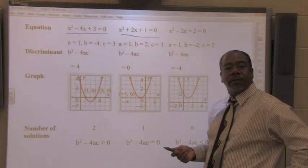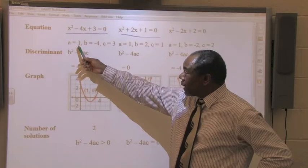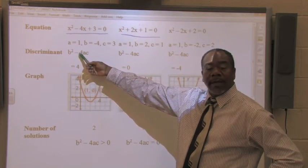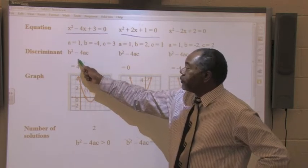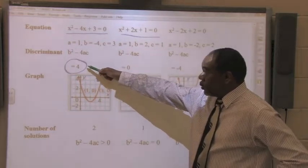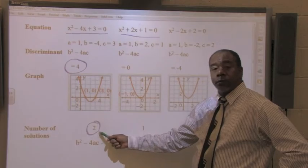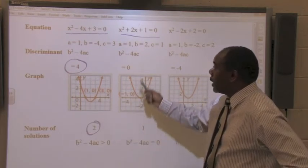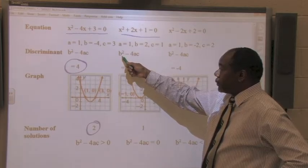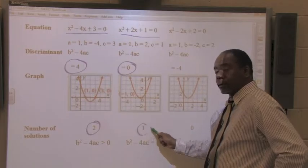Here's how you can determine how many solutions there are using the discriminant. If you take a look at the A, B, and C values, use the discriminant formula, evaluate it. In this case, you get a positive 4. If your solution is positive, there will always be two solutions. If you take a look at the A, B, and C values, and plug them into the discriminant, and you get zero, there will be one solution.